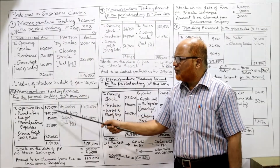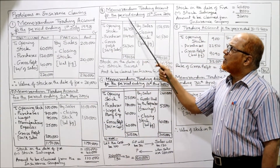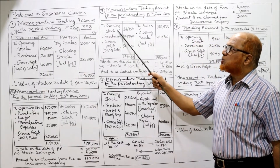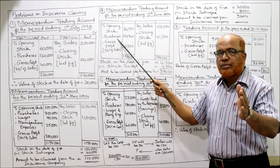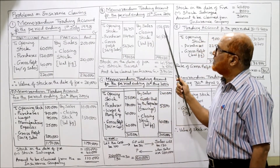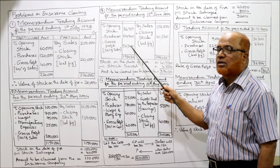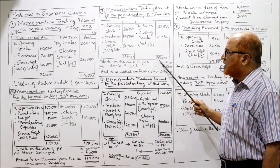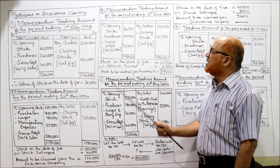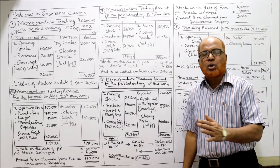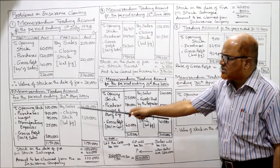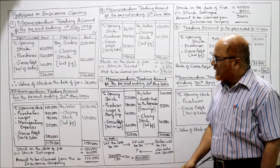Memorandum trading account for period ending 15th June 2004: sales 1,56,500; opening stock 36,750; purchases 1,04,940; gross profit 36% of 1,56,500 = 56,340. Debit total: 1,98,030. Closing stock (balancing figure): 1,98,030 − 1,56,500 = 41,530. Less stock salvaged: 4,500. Amount to be claimed from insurance company: 37,030. Exactly similar to the previous problem.